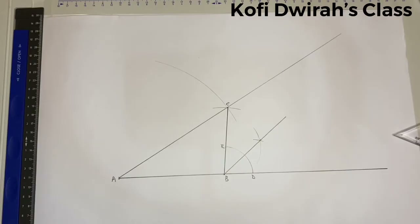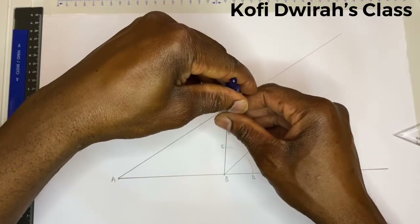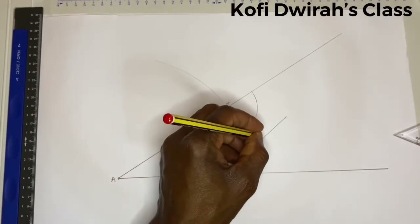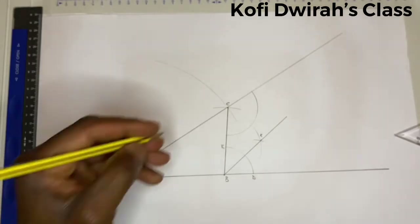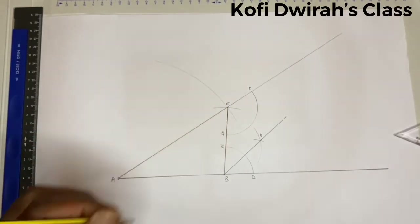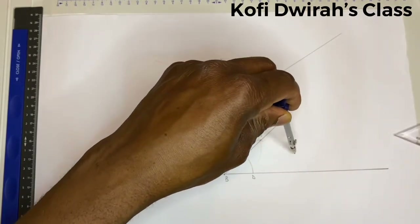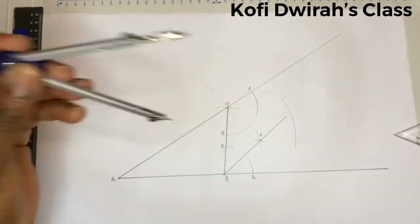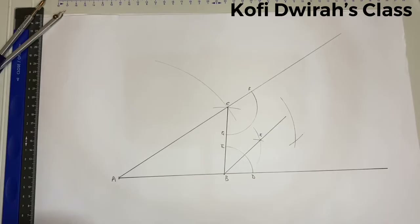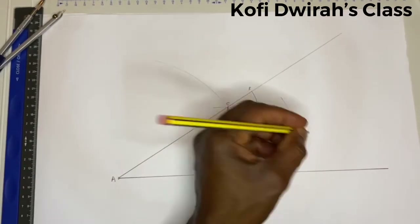Then at point C you draw an arc. Let's mark this point as point K. Here we have point F and point G. You bisect this angle as well — open your compass, draw this arc, then at this point you draw another arc. Then you draw a line through this intersection point.